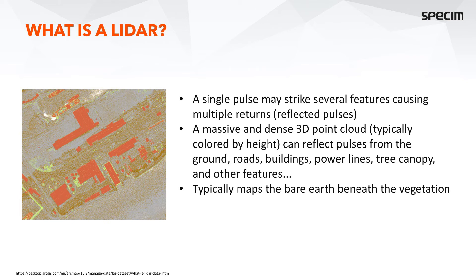For example, when a laser pulse hits a tree, the first return comes from the top, then there may be additional returns from the sides, and finally a reflection from the ground surface. These 3D point clouds are typically huge; they are colored by height and reflect pulses from the ground, roads, buildings, power lines, tree canopy, and more. One of the typical products is that it maps the bare earth beneath the vegetation.